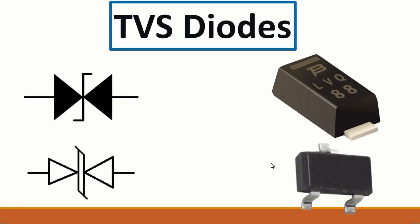The next component is the TVS diode. This is another type of diode. It could be a two-terminal diode or a three-terminal diode. We have this symbol — it could be this symbol or this symbol.